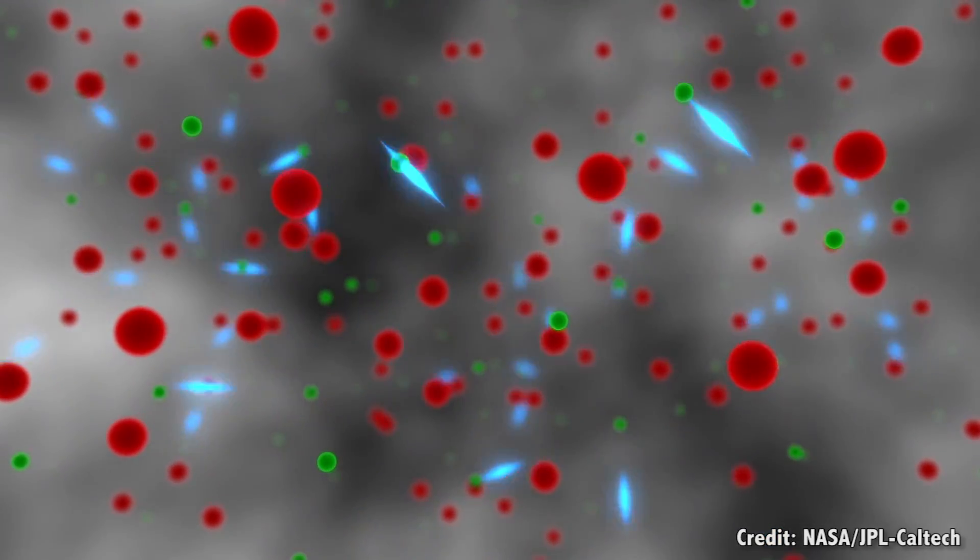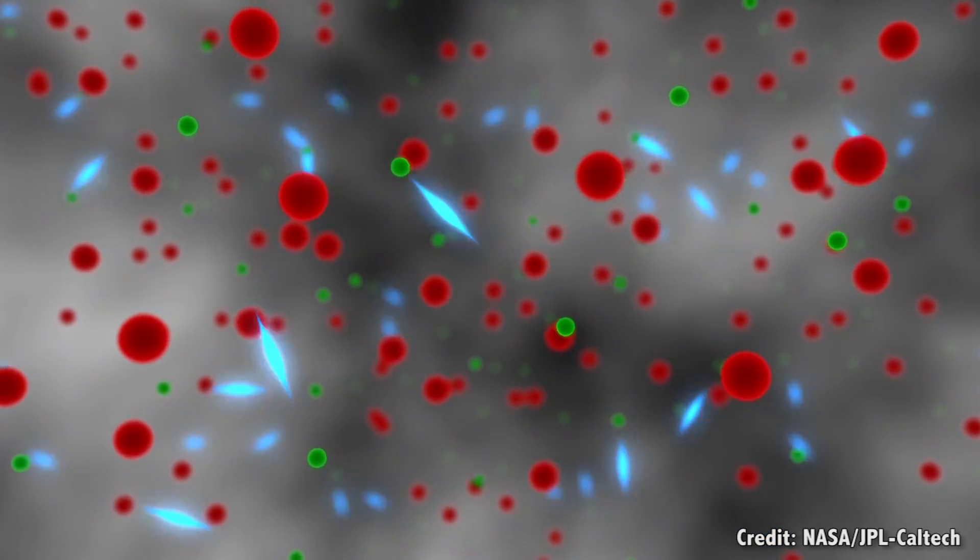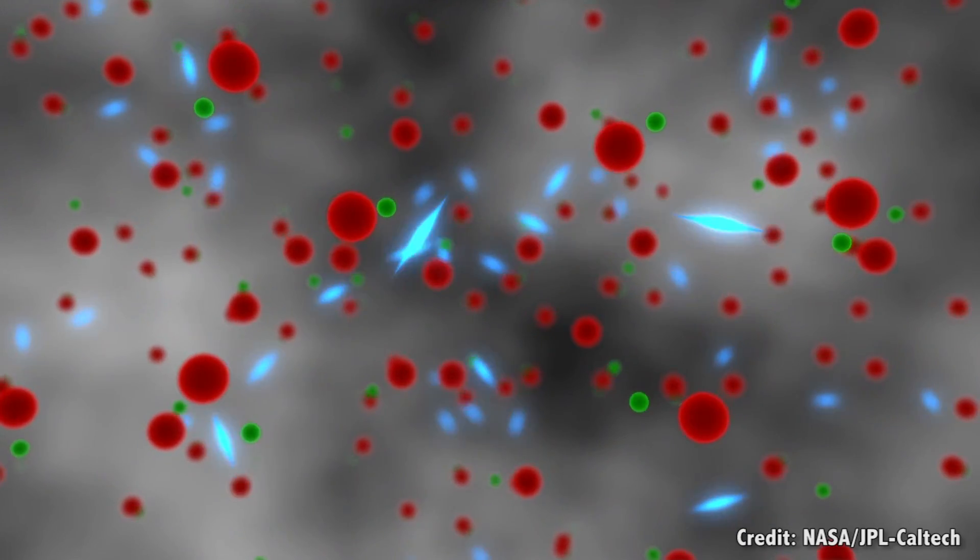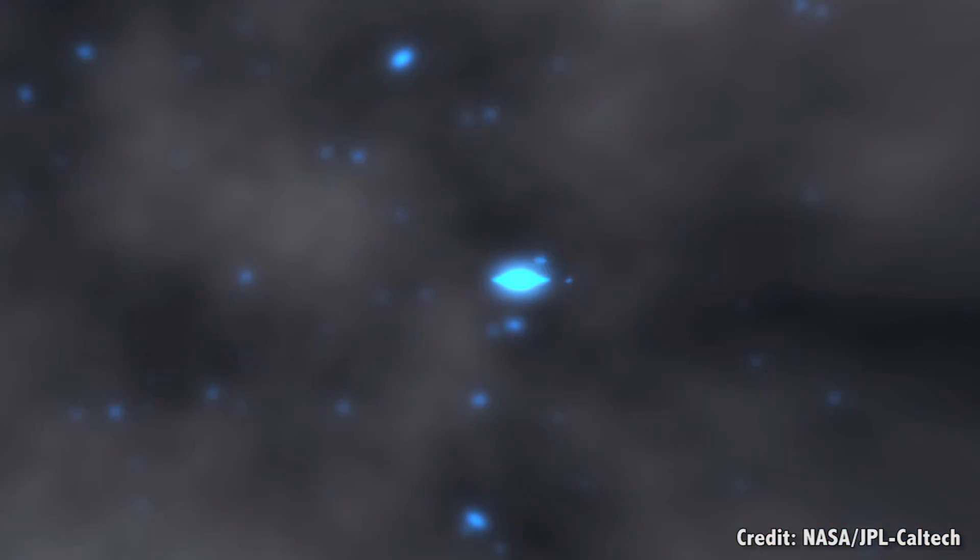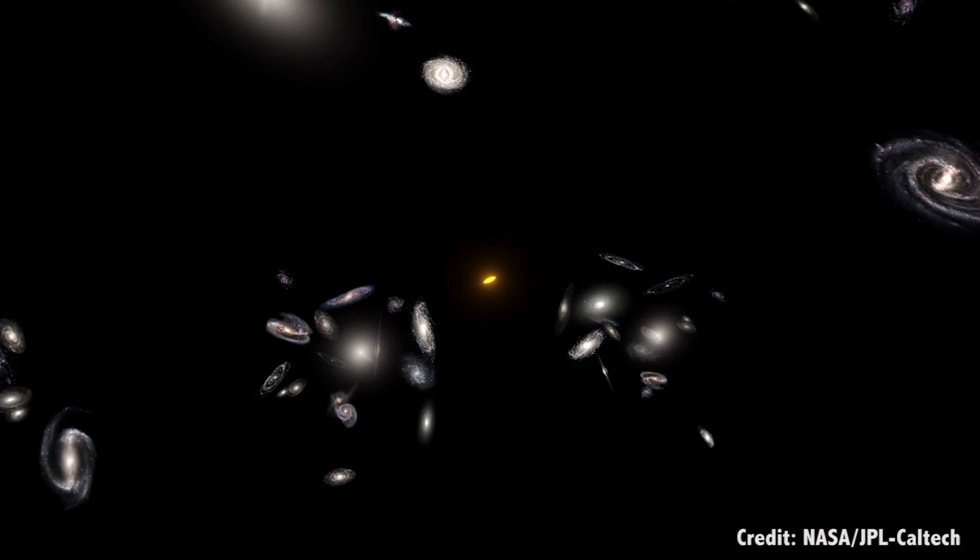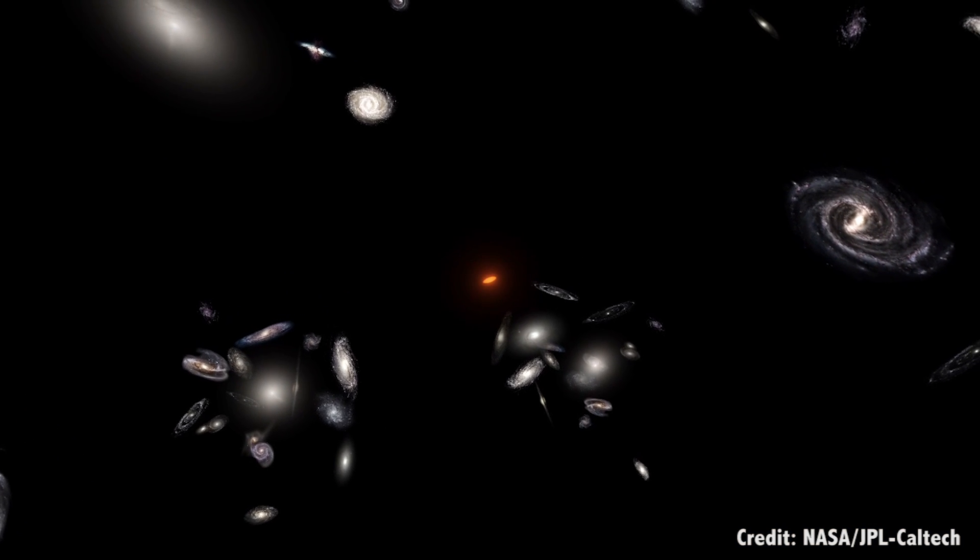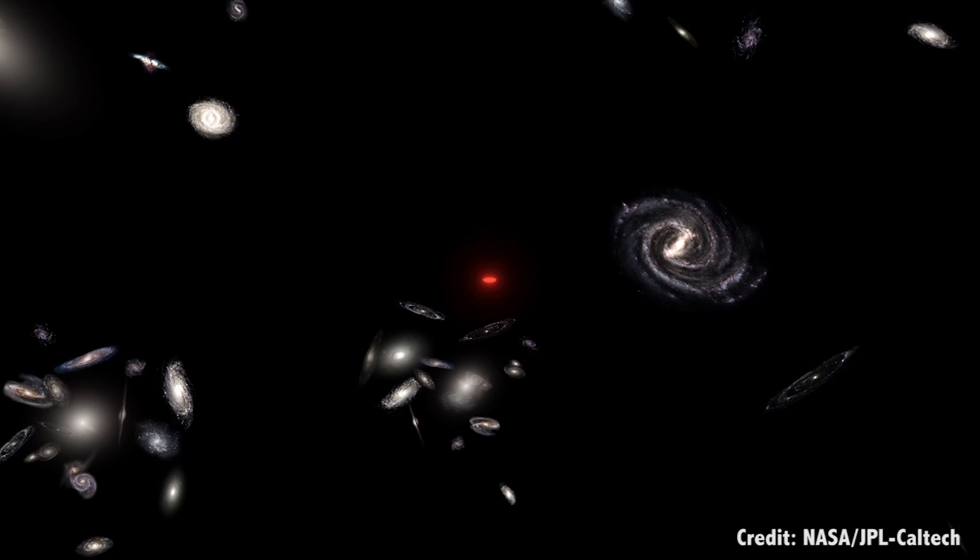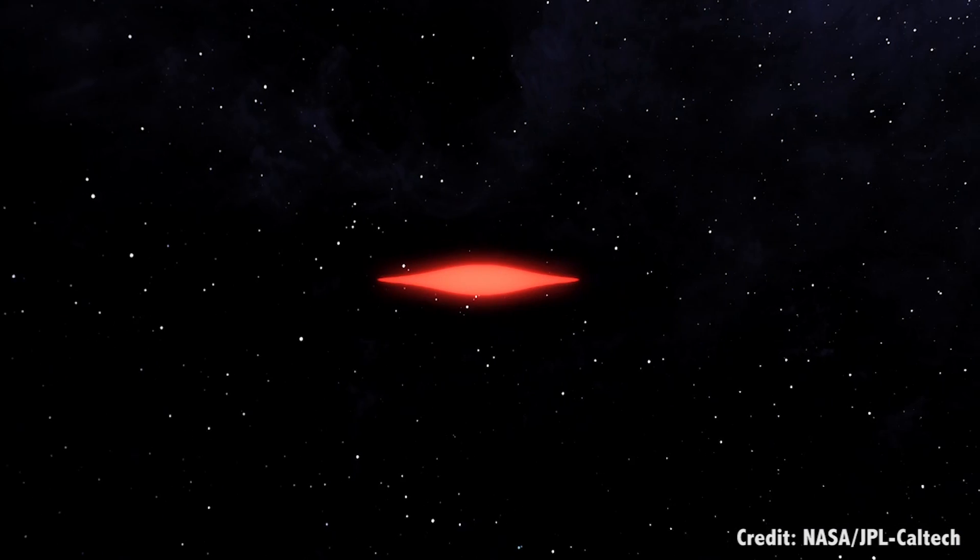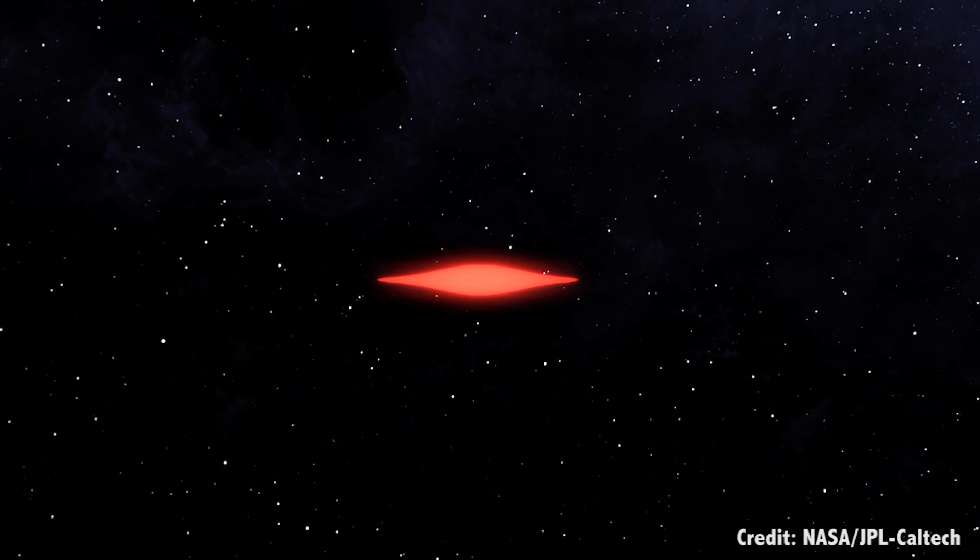When this radiation was released, the entire Universe was approximately 2,700 degrees Celsius. This was the moment when it was cool enough for photons to be finally free to roam across the Universe. The expansion of the Universe stretched these photons out over their 13.8 billion year journey, shifting them down into the microwave spectrum, just 2.7 degrees above absolute zero.